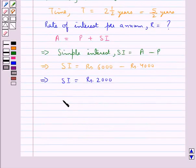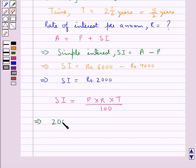Now we know that the formula for simple interest SI is equal to principal P × rate of interest per annum R × time T / 100. Substituting the values for P, T, and SI, we get 2000 = 4000 × R × 5/2 / 100.